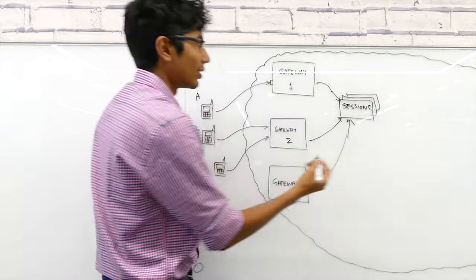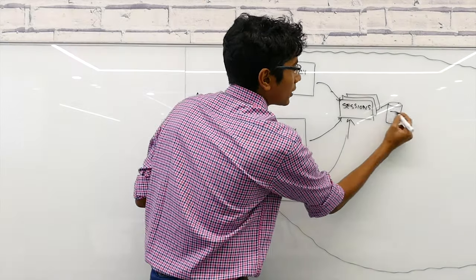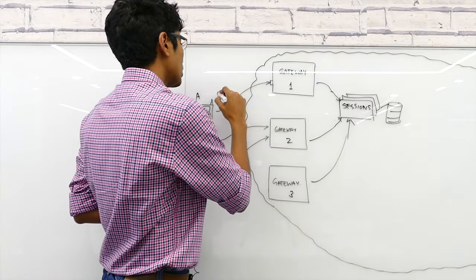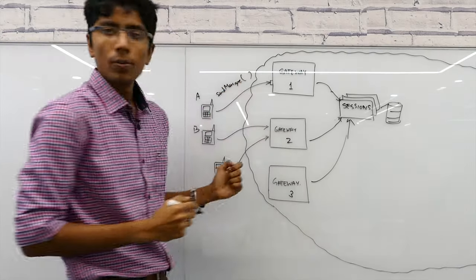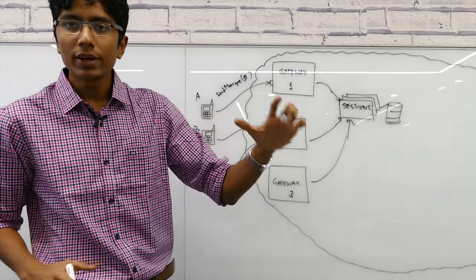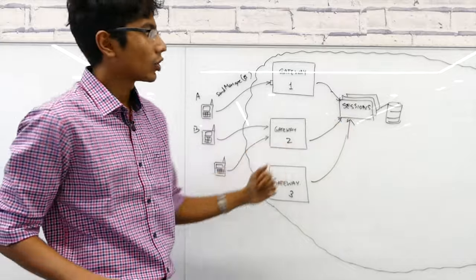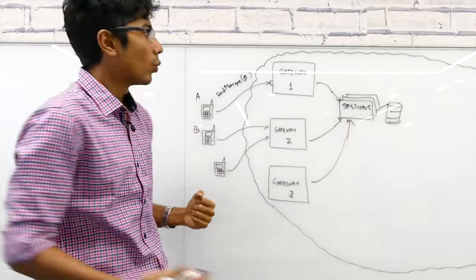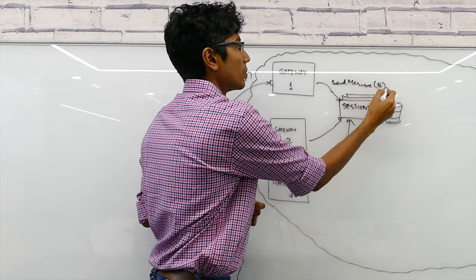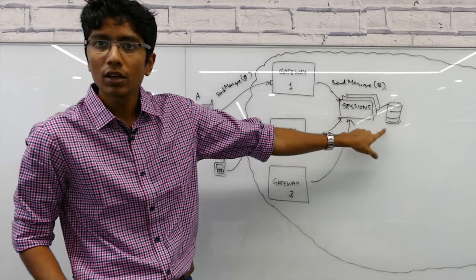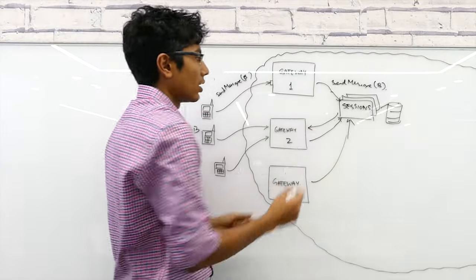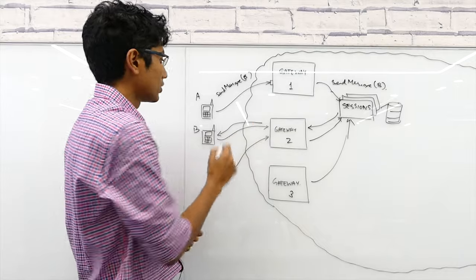When user A sends a message, it sends a 'send message' request with user B's ID. When the gateway gets this message, it's dumb — it just sends it to the session service. The session service acts as a router: when it gets the request to send a message to user B, it figures out which box user B is connected to, then routes the message to that gateway — say gateway 2 — to send it back to user B.